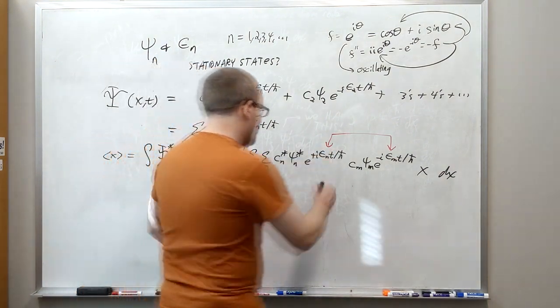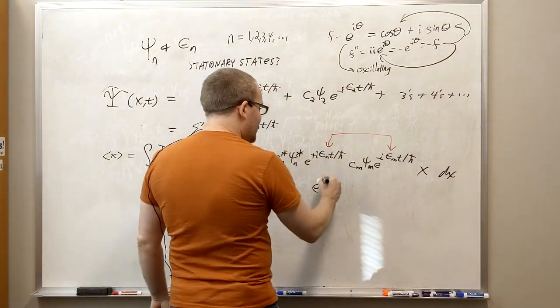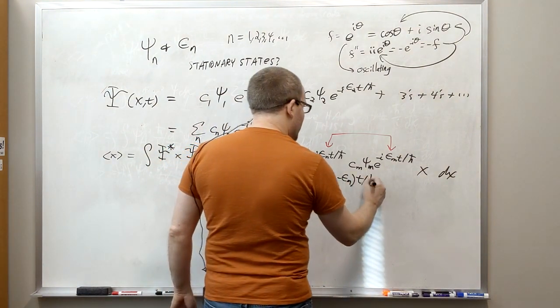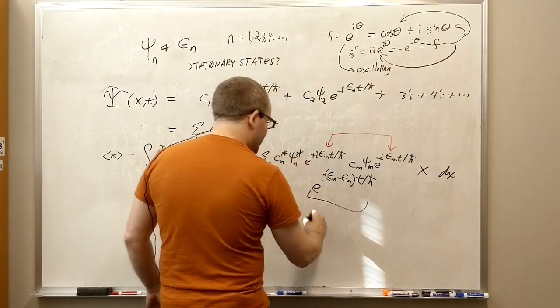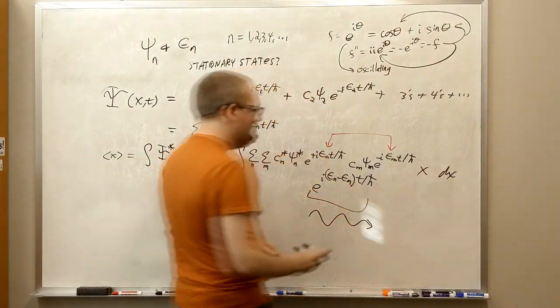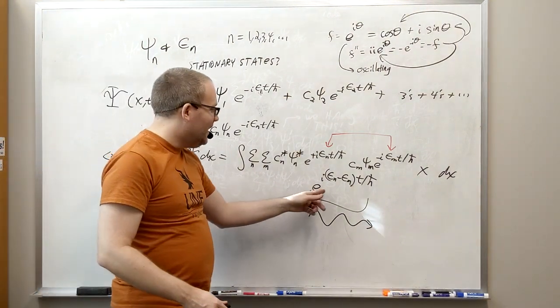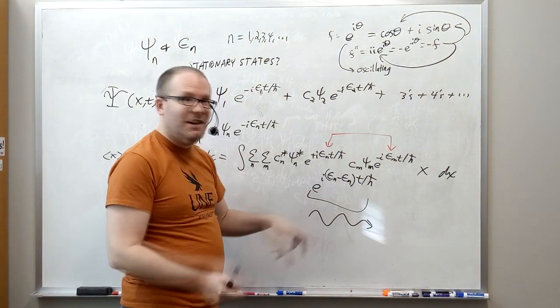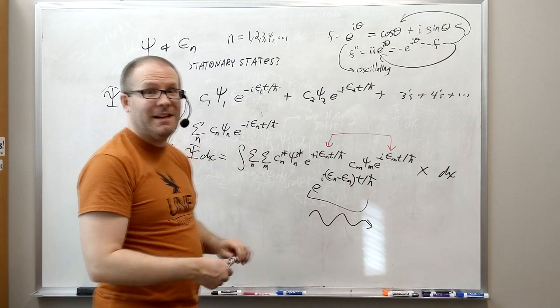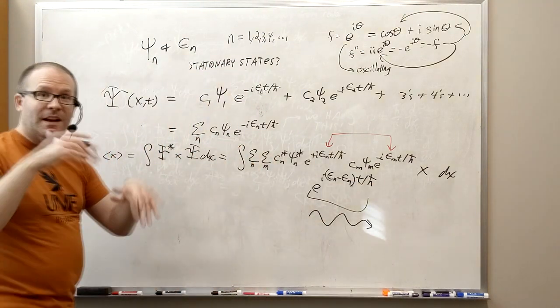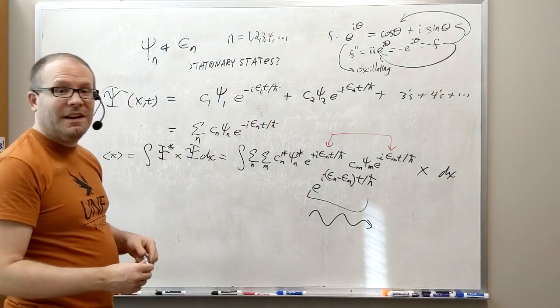And so what happens with this piece in red here, is you get e to the i, e_n minus e_m t over h bar. And this is the thing that makes the expectation value of x oscillate up and down with respect to time. Because you've got this difference in energies here. They don't cancel out because they're automatically different from each other. And so this is going to make this expectation of x value oscillate as the thing evolves in time.